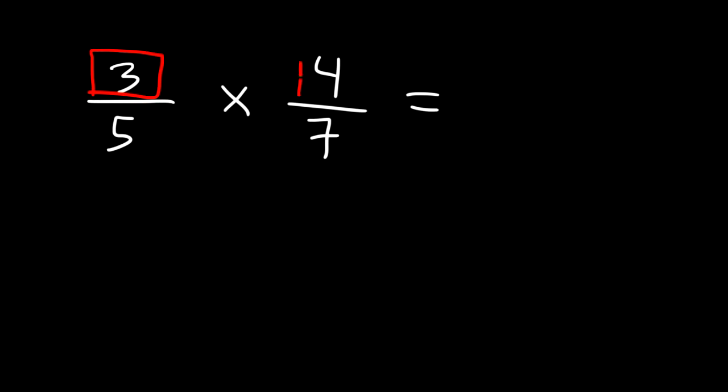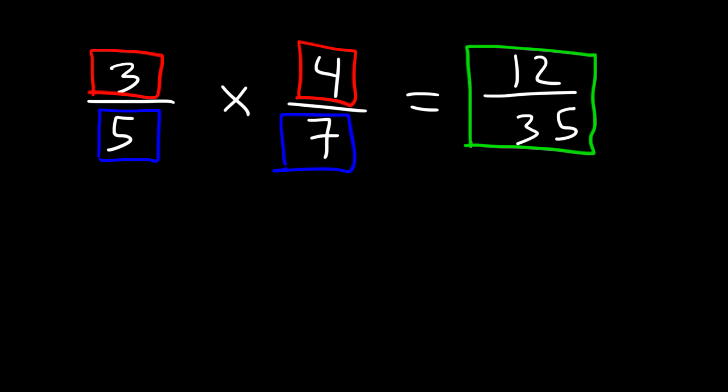So we're gonna multiply 3 and 4 together. 3 times 4 is 12. Next we need to multiply the two denominators together. 5 times 7 is 35. And so that's it for this problem, the answer is 12 over 35. Now it's important to check and see if you could reduce the fraction. For this example we can't simplify the fraction. So the final answer is 12 over 35.